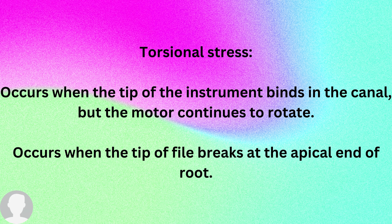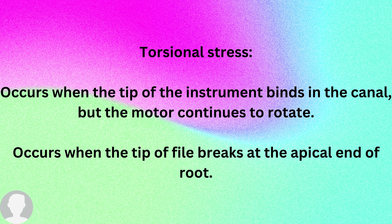Now, what about torsional stress? Torsional stress occurs when the tip of the instrument binds in the canal but the motor continues to rotate. So to differentiate: cyclic fatigue equals bicycle — it keeps rotating and does not bind. Torsional stress is like glue — the tip binds in the canal.